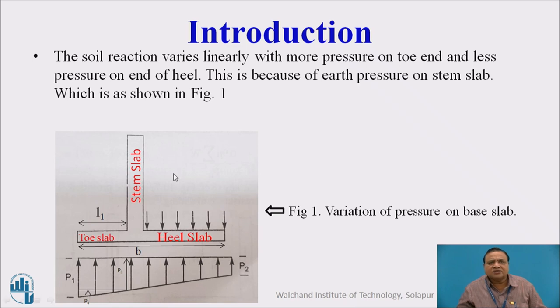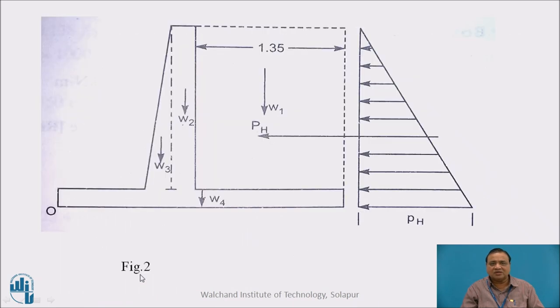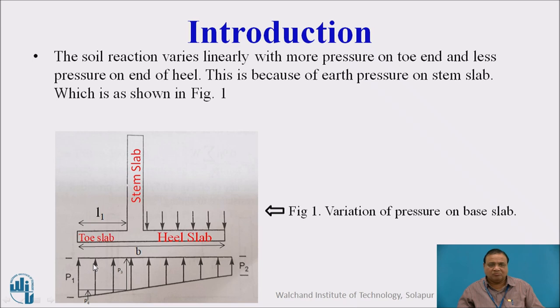Introduction. The soil reaction varies linearly with more pressure on toe end and less pressure on heel end. This is the toe slab, this is stem slab, this is heel slab of a cantilever retaining wall. At the end of toe slab you find maximum pressure and at the end of heel slab you find minimum pressure. This is due to earth pressure on stem slab, which is shown in Figure 1. Due to earth pressure, you find P by A, that is M by Z, gives the maximum pressure P1 and minimum pressure on the heel side.